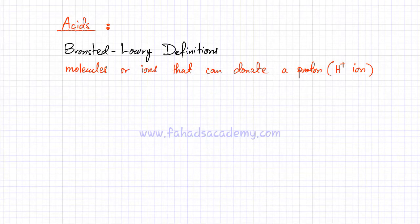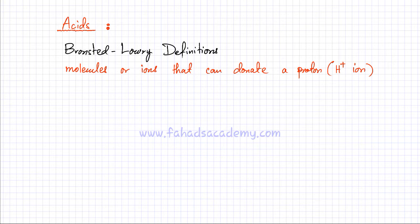In this lecture I'm going to explain what an acid is. You've been very familiar with the term acids — it's a very important concept in chemistry. It has multiple definitions and they're all pretty much the same. I'll start with the Bronsted-Lowry definition: acids are molecules, compounds, or ions that can donate a proton. A proton is simply an H+1 ion, so any molecule capable of producing an H+1 ion is called an acid.